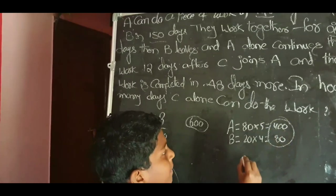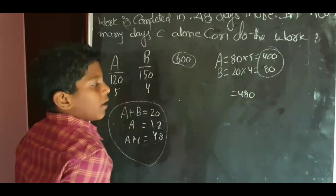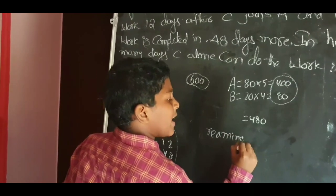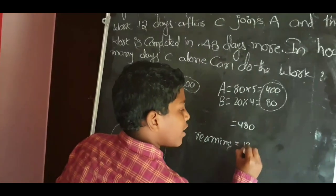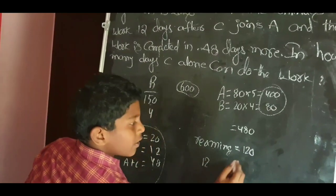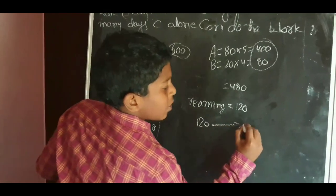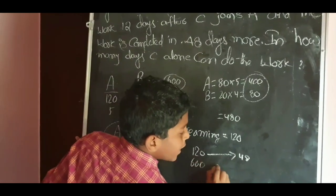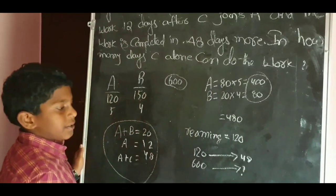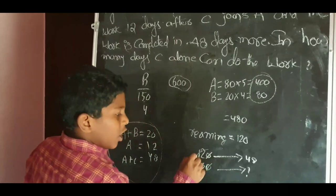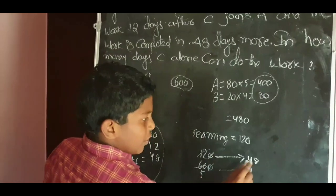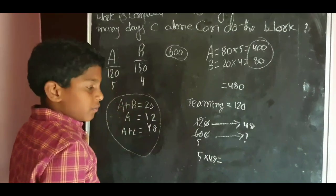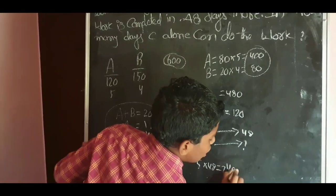Total work done by A and B is 480 units. Remaining work is 120 units, which C completed in 48 days. To find how many days C alone can do the full 600 units, using cross multiplication: 12 goes 5 times, so 5 into 48 equals 240. C alone can do the work in 240 days.